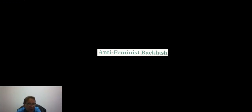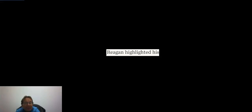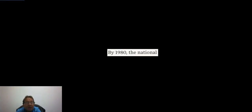There was also an anti-feminist backlash. Anti-feminists like Phyllis Schlafly — a conservative Catholic attorney and Republican activist from Alton, Illinois — stopped the ERA, which failed by three states to get the required 38 for ratification. Reagan highlighted his support for traditional family values, gender roles, and rights of the unborn, which helped persuade many northern Democrats — mostly working-class Catholics from the traditional New Deal coalition — to switch parties and support Reagan.